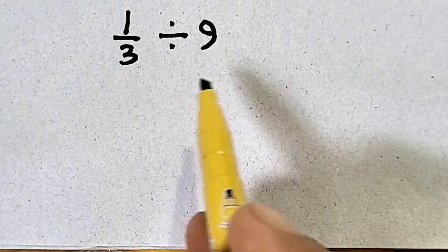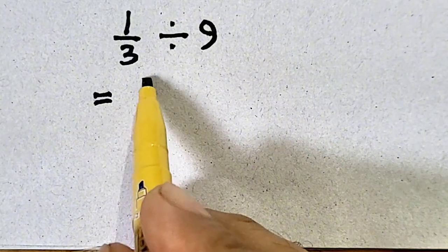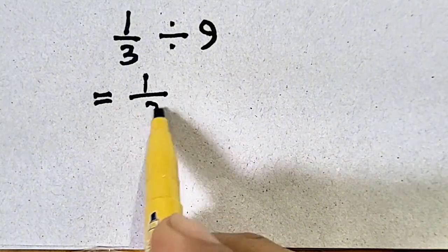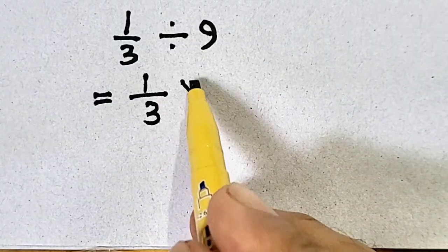So, this simple question is solved by using KCF. KCF means first as it is. Divide is changed into multiplication.